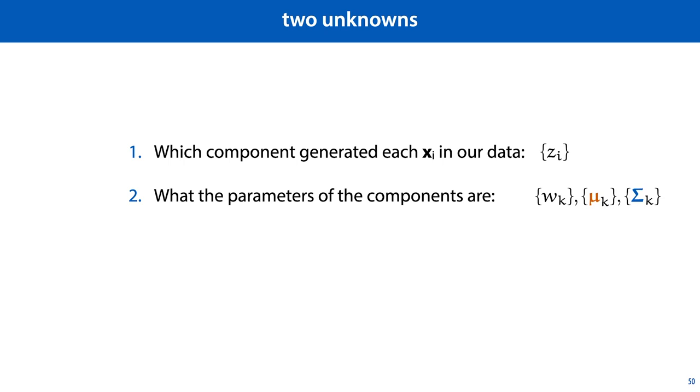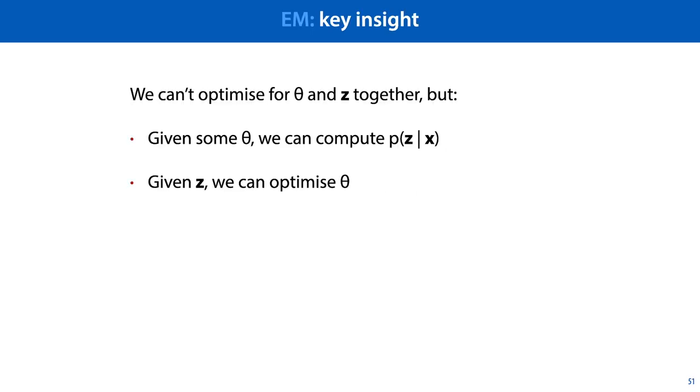The other way around seems reasonable as well. Given the components and their relative weight, it shouldn't be too tricky to work out how likely each component is to be responsible for any given instance. This is the key insight to EM. If we have some model parameters theta and some hidden variables Z, then we cannot optimize for theta and Z together. But we can, given some theta, compute the most likely values for the hidden variables. And given those values, we can then optimize theta.